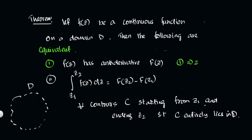Equivalent means: if Statement 1 is true, then Statement 2 is true (1 implies 2); and if Statement 2 is true, then Statement 1 is true (2 implies 1). This holds for all contours C starting from z1 ending with z2 such that C is entirely in D. So we simply need to prove both directions.